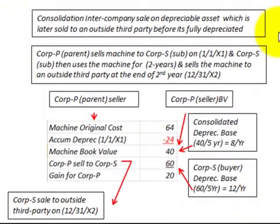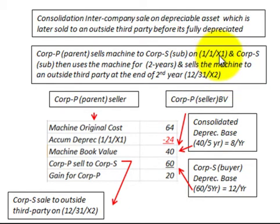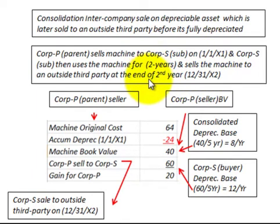We're going to be looking at a consolidation of an intercompany sale of a depreciable asset which is later sold to an outside third party before it's fully depreciated. Corporation P, the parent, sells a machine to Corporation S, the subsidiary, on 1-1 of X1. Corporation S then uses the machine for two years and sells it to an outside third party at the end of the second year, 12-31-X2.